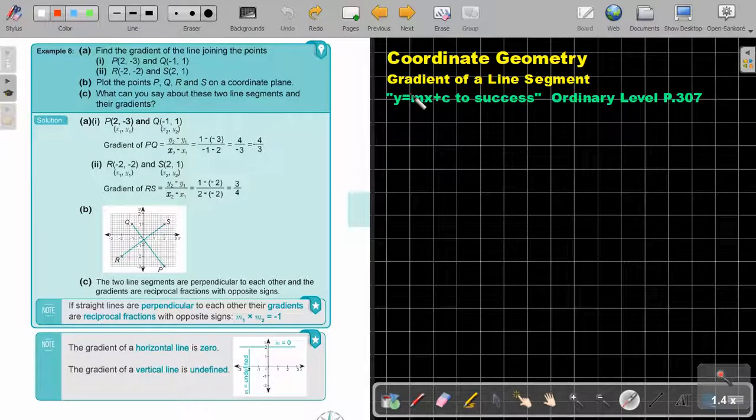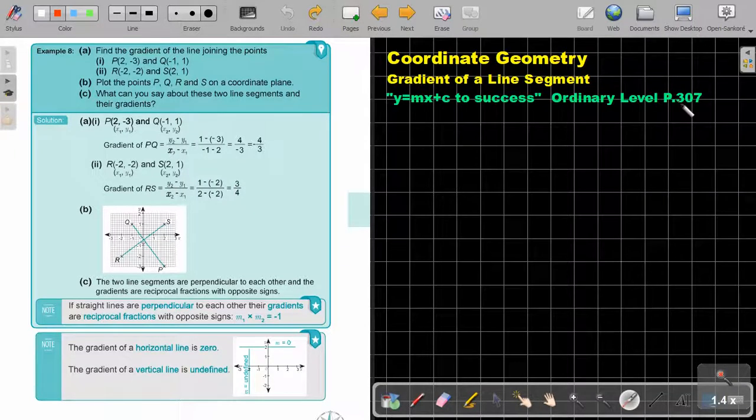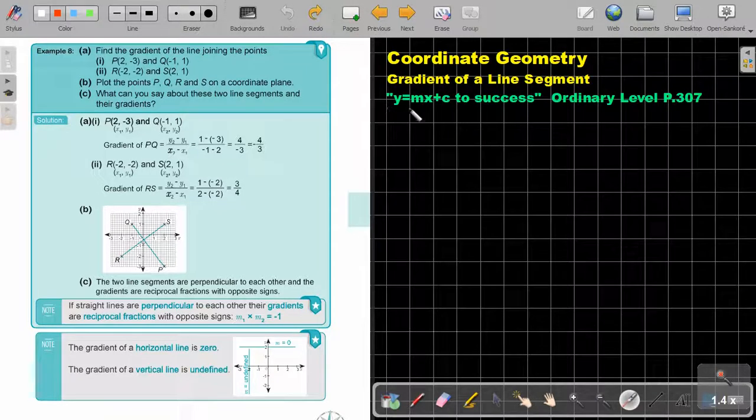In this video we are going to continue with the gradient of a line segment. You will find this on page 307 in the Namibia Ordinary Level Mathematics textbook y equals mx plus c to success.